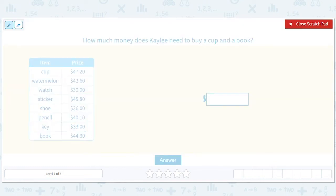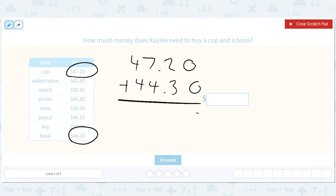How much money does Kaylee need to buy a cup and a book? So we've got a cup, we've got a book, we've got to add them up, right? So we have $47.20 plus $44.30. So we'll have 0, 5, this will be an 11, there'll be a 1 here, it'll be $91.50. Just check our work, you got 50 cents, yep, $91.50.